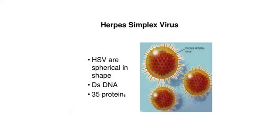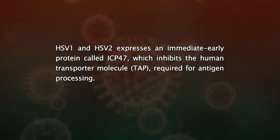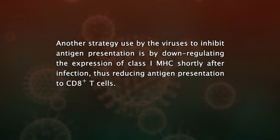Another mechanism used by some viruses to evade the immune system is by inhibiting the antigen presentation by virus-infected cells. One such virus is herpes simplex virus. HSV-1 and HSV-2 express an immediate early protein called ICP-47, which inhibits the human transporter molecule TAP required for antigen processing. Another strategy used by viruses to inhibit antigen presentation is by down-regulating the expression of class I MHC shortly after infection, thus reducing antigen presentation to CD8-positive T cells.